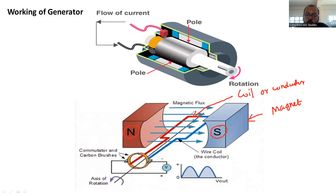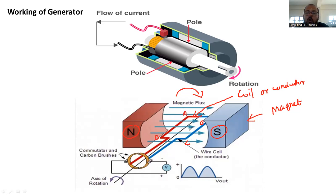Next, what we have to do is rotate the coil or conductor within the magnetic field. The rotation can be either clockwise or anticlockwise direction. Whenever a conductor — let's call it A, B, C, D — rotates in the clockwise or anticlockwise direction inside the magnetic field, the magnetic flux will cut or interact with the coil ABCD. The group of magnetic lines of force is known as magnetic flux.